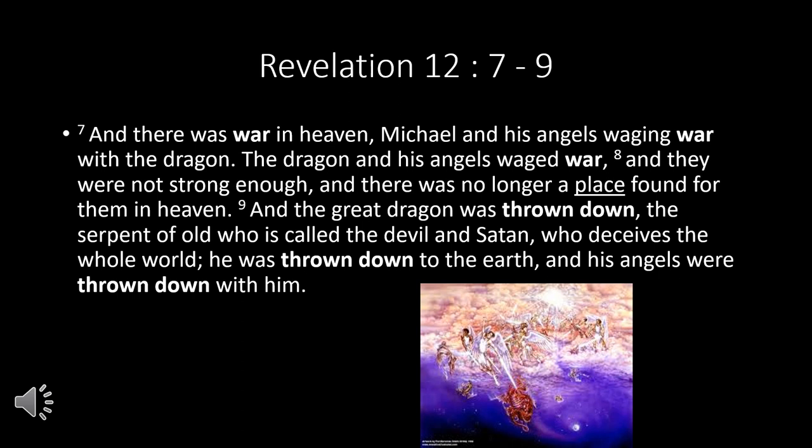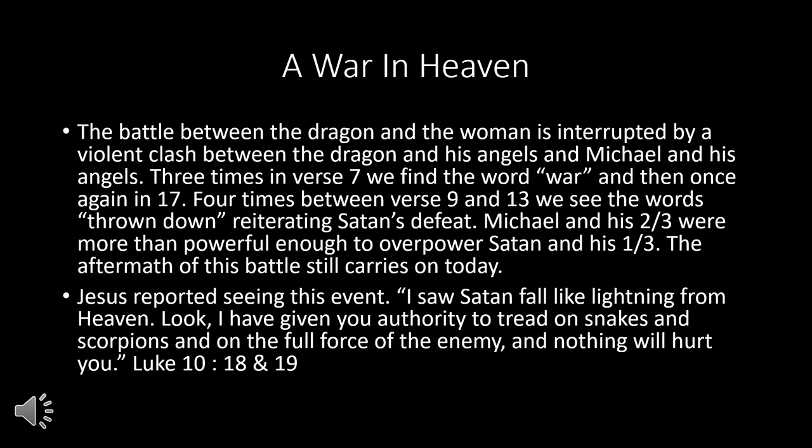Revelation 12:7-9: 'And there was a war in heaven. Michael and his angels waged war with the dragon. The dragon and his angels waged war, and they were not strong enough, and there was no longer a place found for them in heaven. And the great dragon was thrown down — the serpent of old, who was called the devil and Satan, who deceives the whole world. He was thrown down to the earth, and his angels were thrown down with him.' The battle between the dragon and the woman is interrupted by a violent clash between the dragon and his angels and Michael and his angels. Three times in verse 7 we find the word 'war,' and four times between verses 9 and 13 we see the words 'thrown down,' reiterating Satan's defeat.